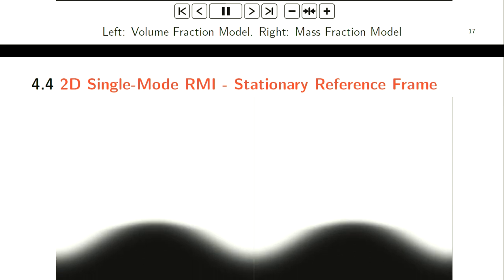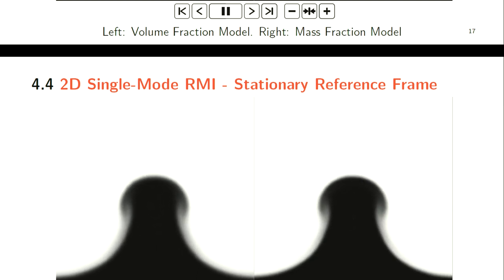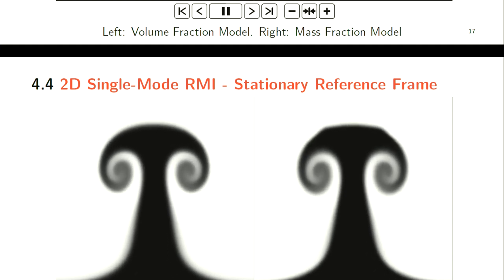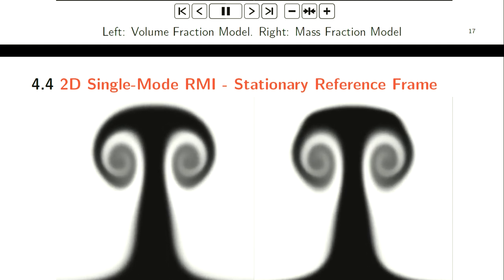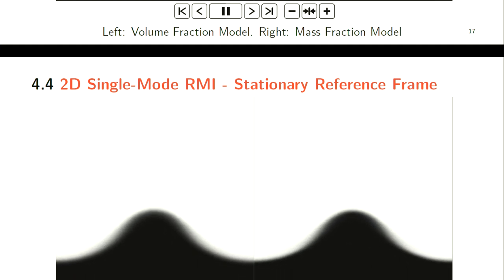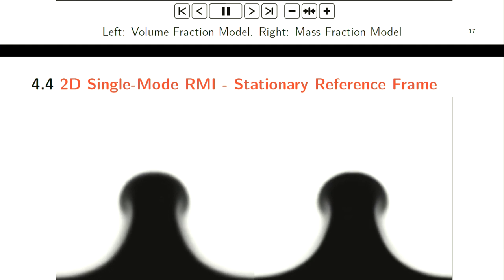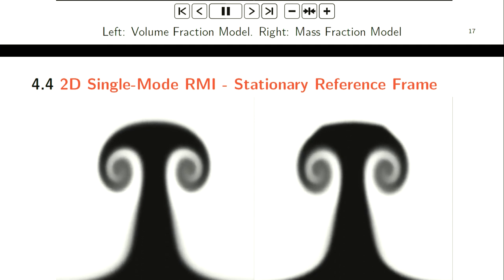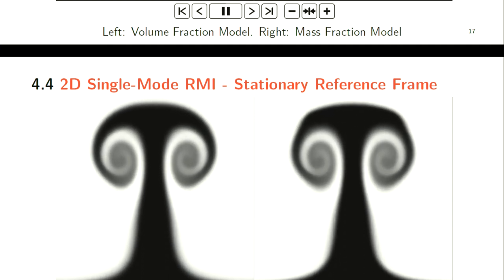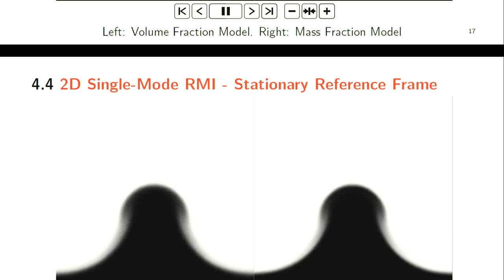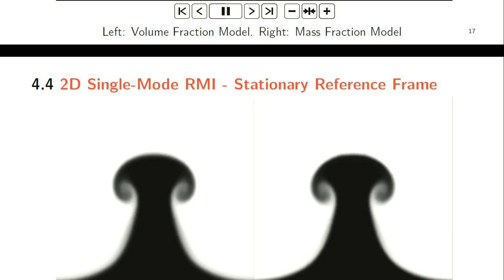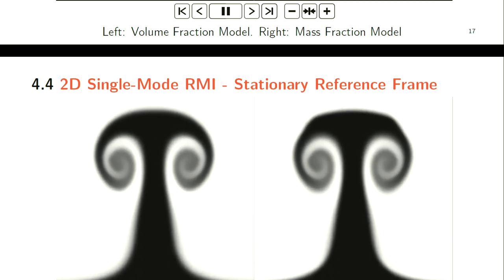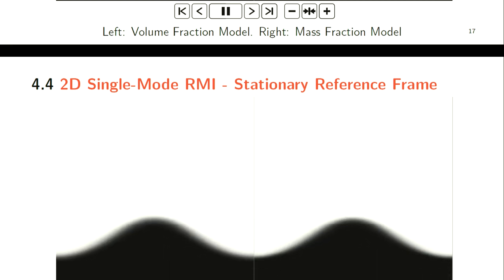The animation on the left is for the new volume fraction equations, on the right is for the mass fraction model. I'd like to draw your attention to two things that really stand out. The shape of the spike seems to flatten out a lot more, which we deem to be an error to the true solution. Also, the interface seems to be a lot thinner when you compare there and there. It's basically due to the fact that the pressure and temperature are actually in error across the interface.